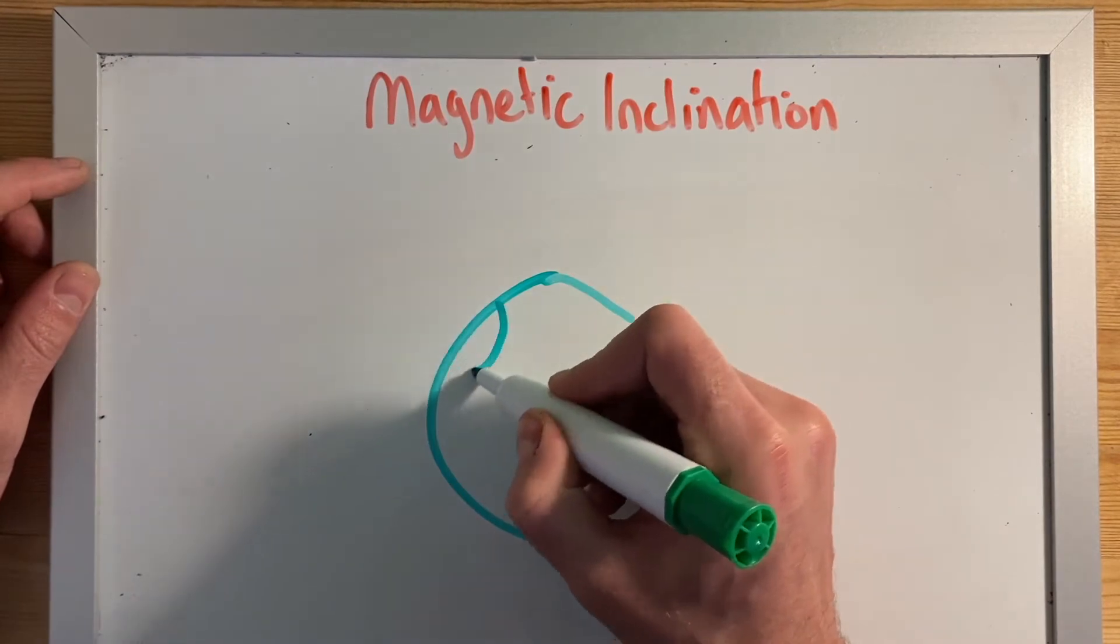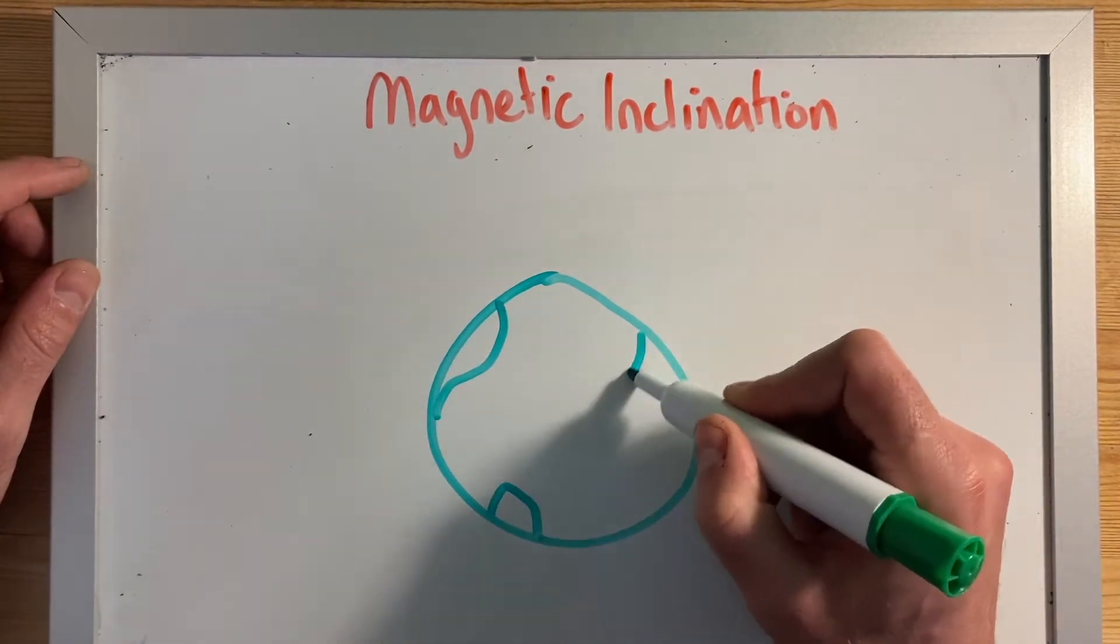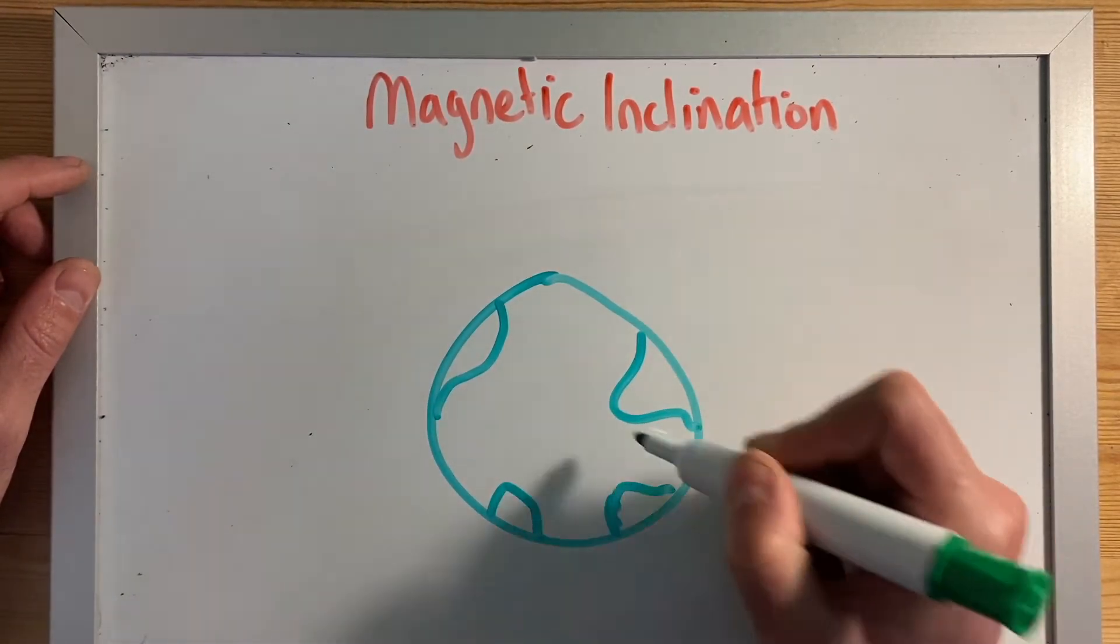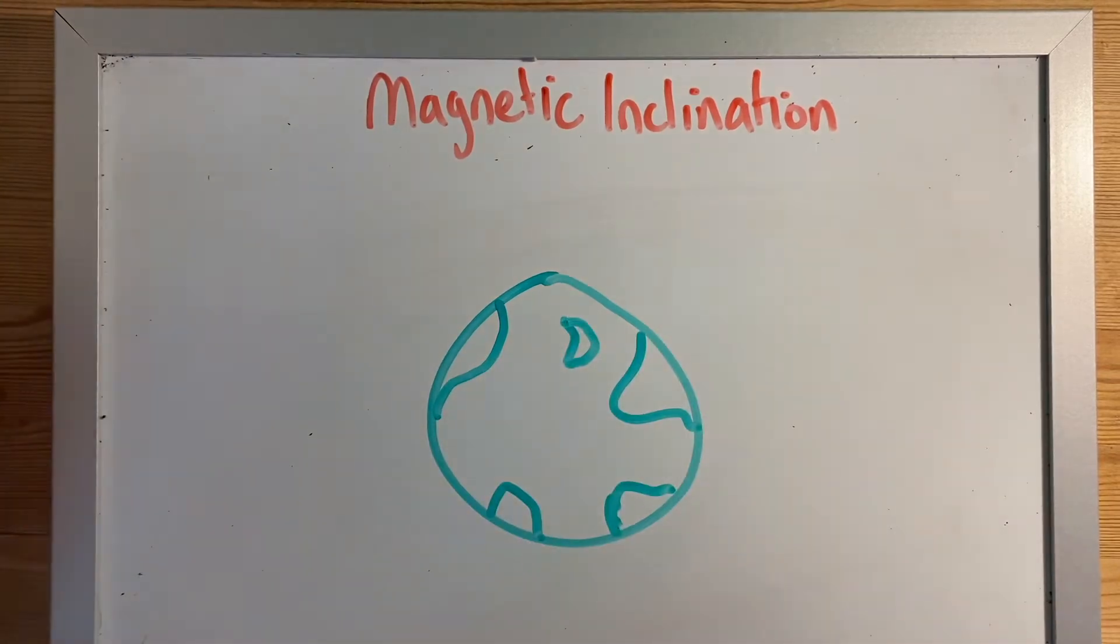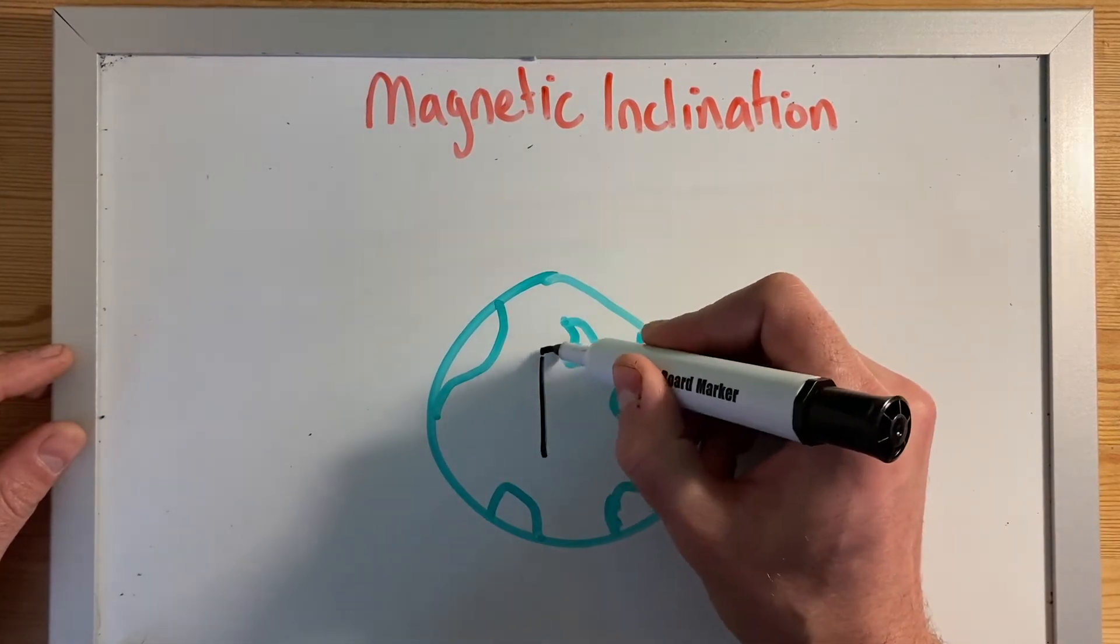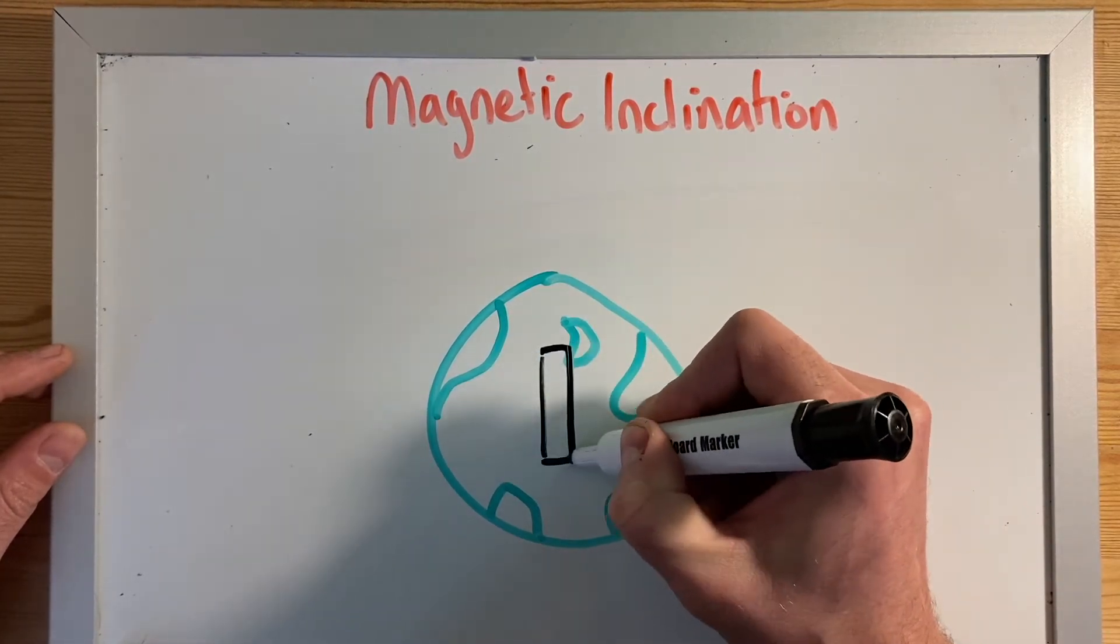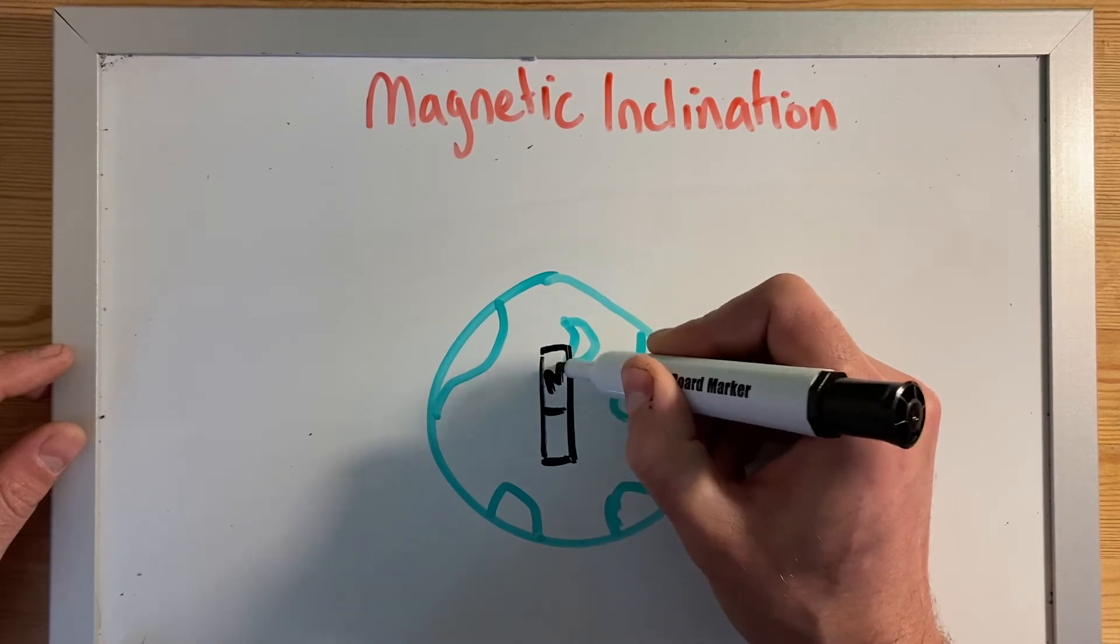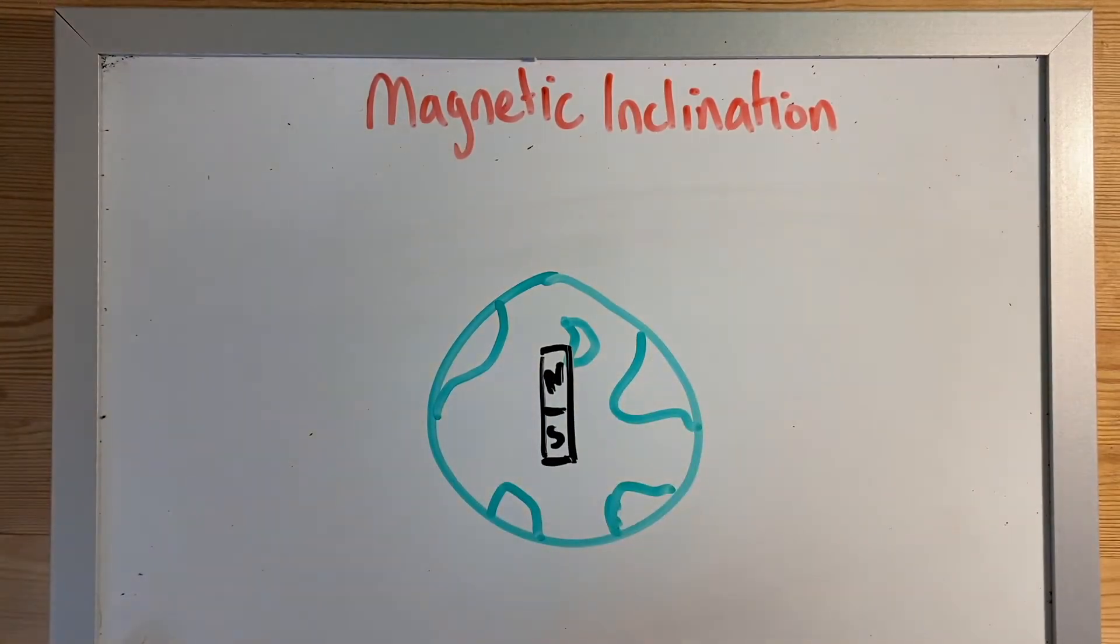This here is planet Earth, with all your land masses and all your islands. So you get the idea, that's planet Earth. Inside the center of planet Earth, you've got this whole molten iron ore core. Basically, what this produces is a magnetic field around the planet. So that's the big old magnet.